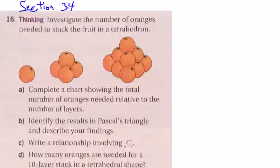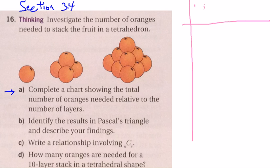Okay ladies and gentlemen, we're going to look at chapter 16, section 3.4. We have to get the number of oranges needed to stack the fruit in a tetrahedron. We have the first three pieces. So part A says complete a chart showing the total number of oranges needed relative to the number of layers. So if we're going to put in the number of layers here, we'll call that N.